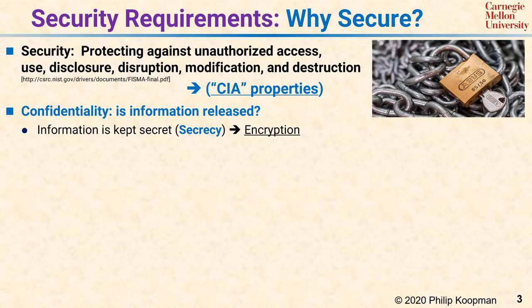As an example, an encrypted thermostat command might obscure what temperature setting you sent to your house via your smartphone. In some systems, an observer might know that you sent a thermostat command, but cannot tell what temperature you selected. In other systems, an observer would know that you sent a message, but not even know that this message is a thermostat command. Either way, you're getting some measure of secrecy.